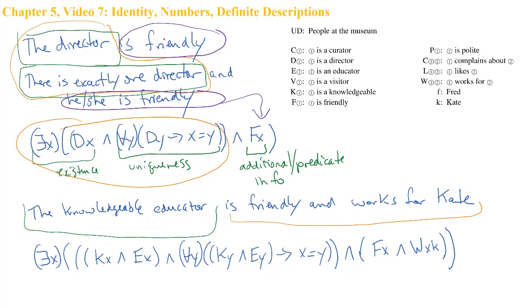So those are the basics of using the identity symbol to do more specific numerical quantification, including precise numerical quantification, and also definite descriptions.